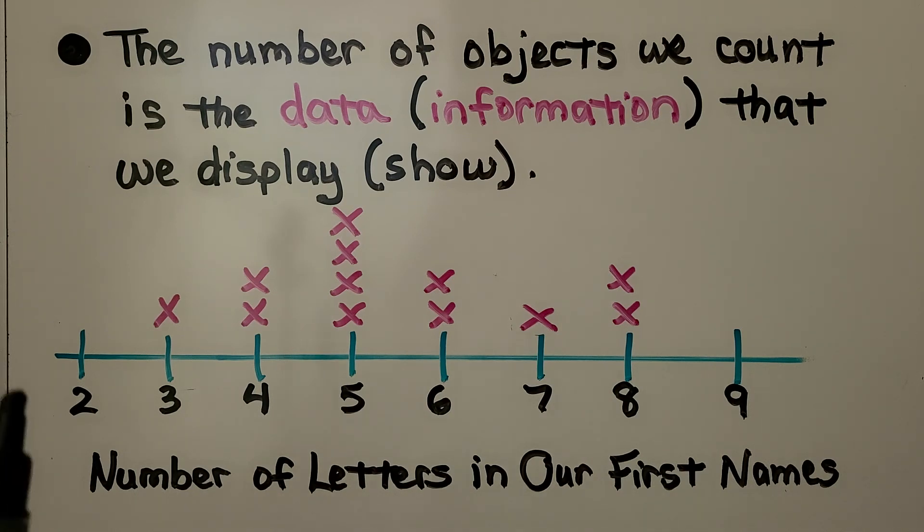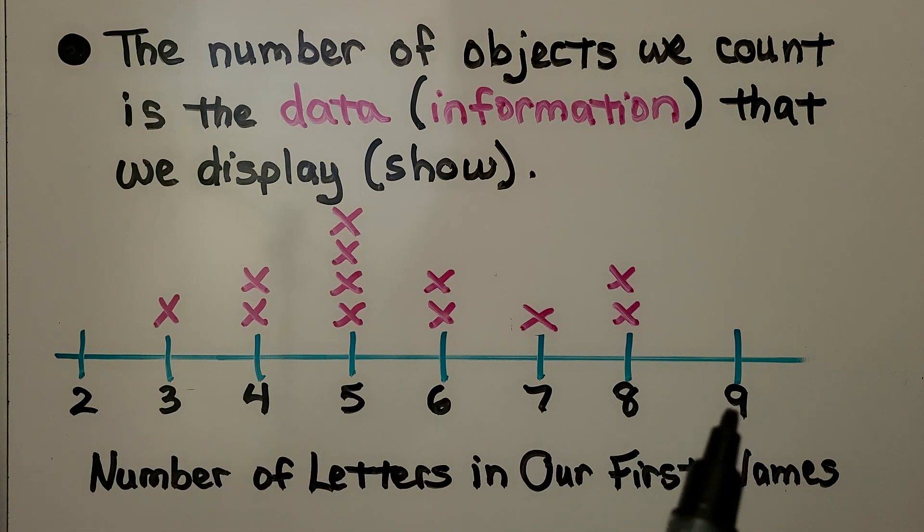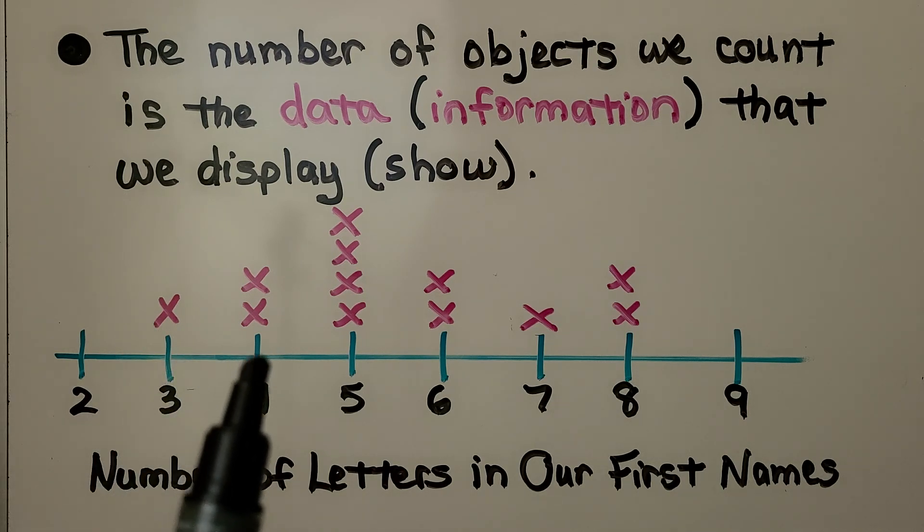So here we have a line plot and you can see it's numbered. And this is the number of letters in our first names. So a classroom or a family put an x for each number of letters in their first name.